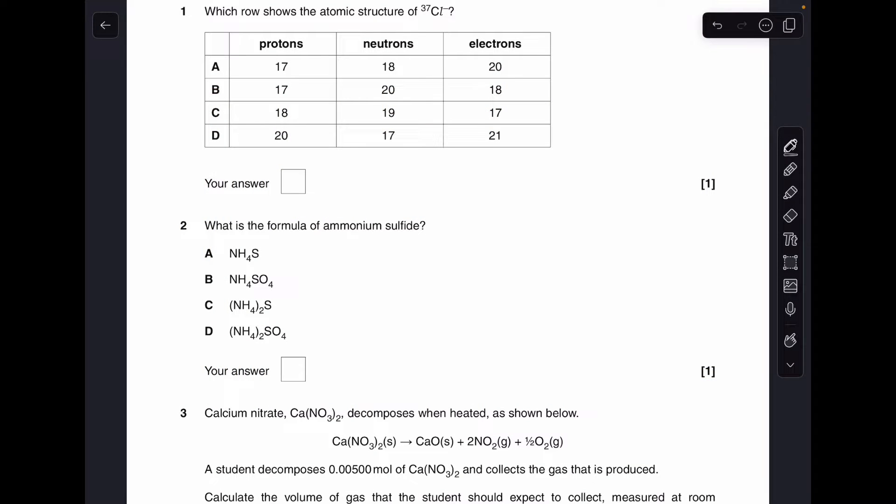Okay so make a start. Which row shows the correct atomic structure? Well we'll rule out C and D straight away because they haven't got 17 protons. Got to have 17 protons for chlorine. So now we'll focus on the charge. If you've got a 1 minus charge you've got one more electron than proton. So B is the answer.